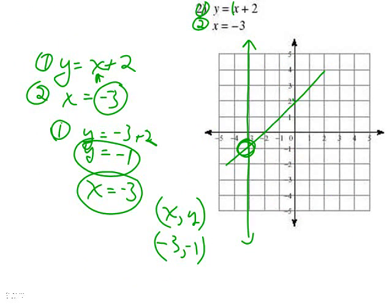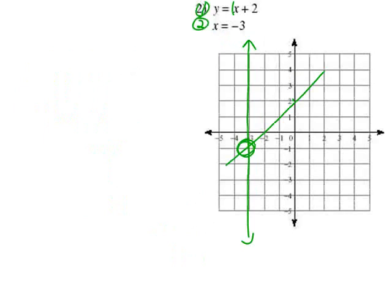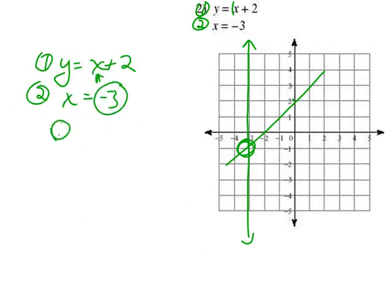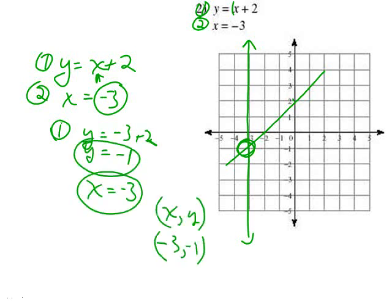The first equation has an intercept of 2 and a slope of 1 — over 1, up 1. The second equation is just a vertical line: x equals negative 3. Where do they cross? Using a ruler, you'll see they cross at negative 3 comma negative 1. Check: is negative 1 equal to negative 3 plus 2? Yes. Is negative 3 equal to negative 3? Yes.